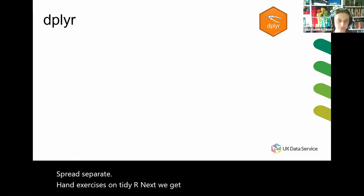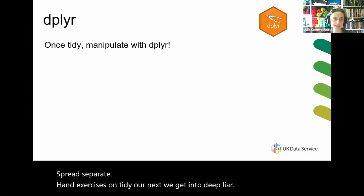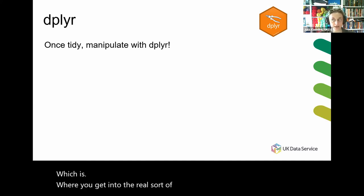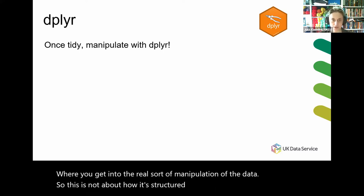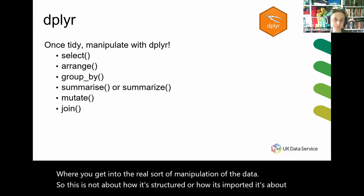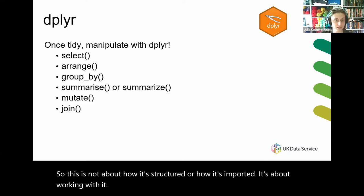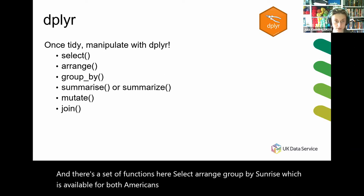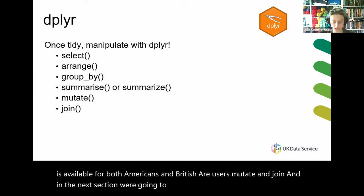Next we get into dplyr, which is where you get into the real manipulation of the data. It's not about how it's structured or how it's imported, it's about working with it. There's a set of functions here: select, arrange, group by, summarize — which is available for both Americans and British R users — mutate, and join. In the next section we're going to work through select to mutate; there's a separate one on join because it's that important.